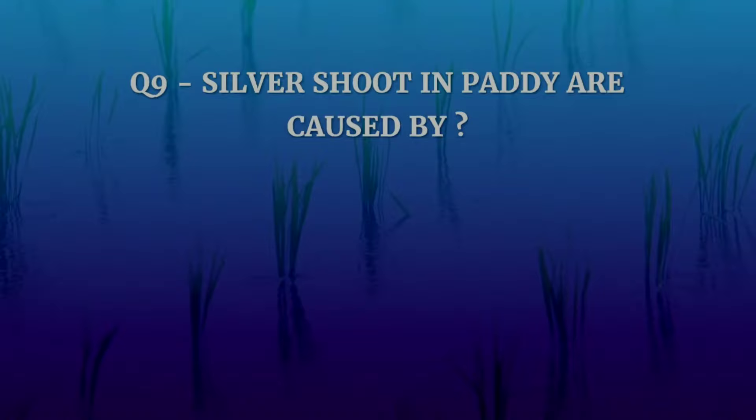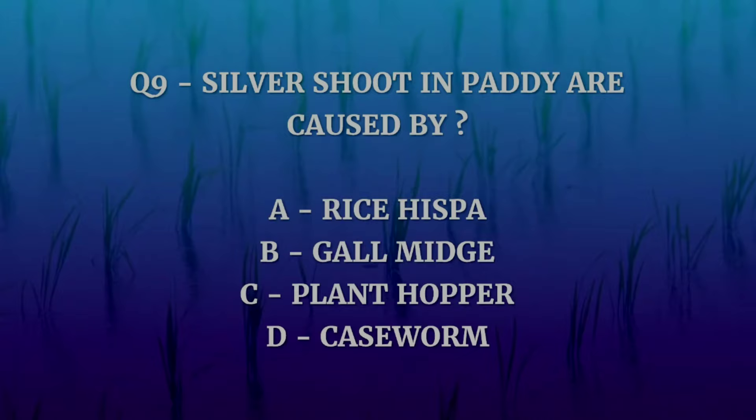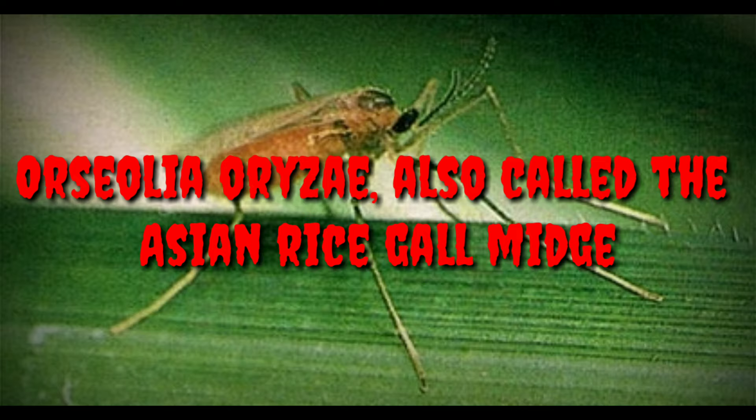Note that termites belong to the order Isoptera, whereas thrips belong to the order Thysanoptera. Question number nine: silver shoot in paddy is caused by which of these? The options are rice hispa, gall midge, planthopper, or case worm. The correct answer is gall midge.